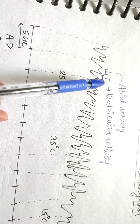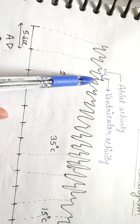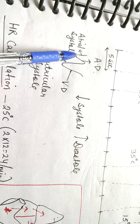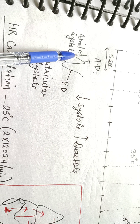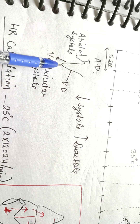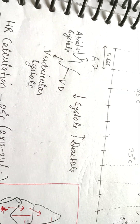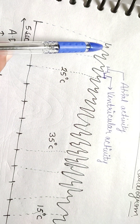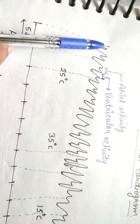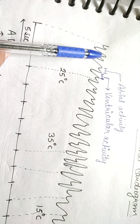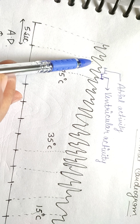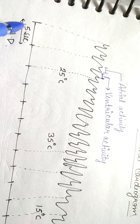Just for revision: the downward deflection of the small activity is atrial systole, the upward deflection is atrial diastole, and the larger deflection represents ventricular systole and ventricular diastole. From this point to this point is one complete cardiac contraction, showing both atrial and ventricular activity.